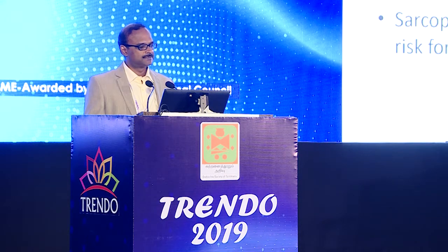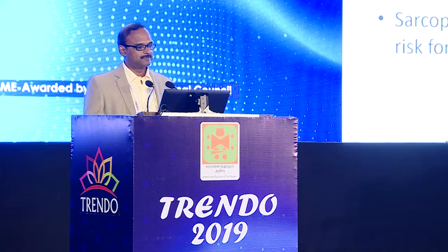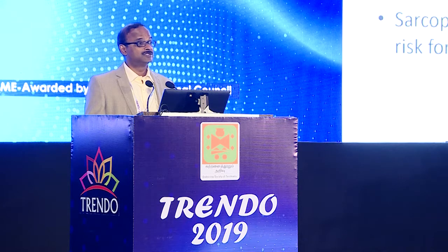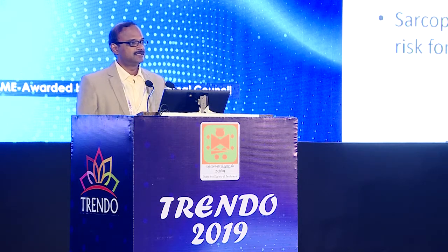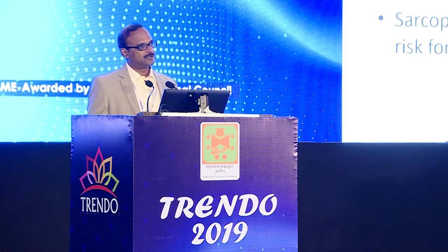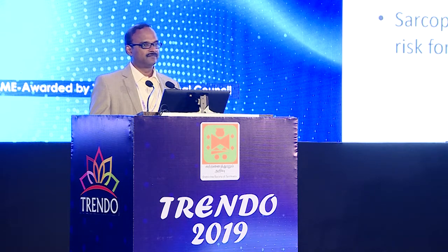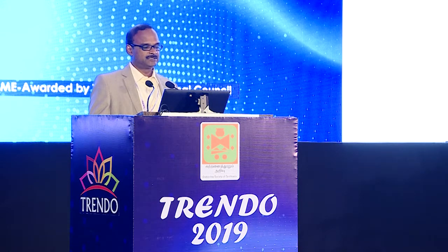Elderly people have other problems as well — musculoskeletal problems like proximal myopathy, gait difficulty, visual impairment, and sedation. Sedation at night causes people to tumble and fall at night. Sarcopenia — that is, decreased muscle mass — also occurs at older age and causes instability and increases the rate of hip fractures.